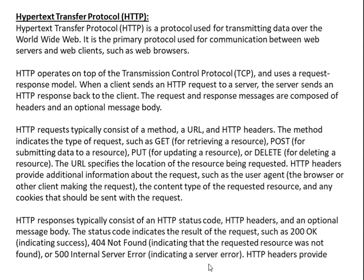HTTP headers provide additional information about the request, such as the user agent (the browser or other client making the request), the content type of the requested resource, and any cookies that should be sent with the request. HTTP responses typically consist of an HTTP status code, HTTP headers, and an optional message body. The status code indicates the result of the request, such as 200 OK indicating success, 404 Not Found indicating that the requested resource was not found, or 500 Internal Server Error indicating a server error.